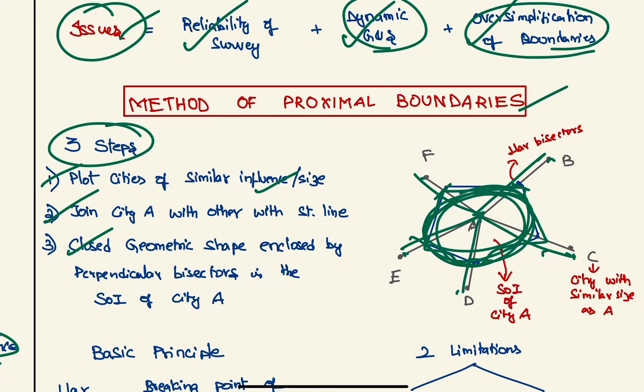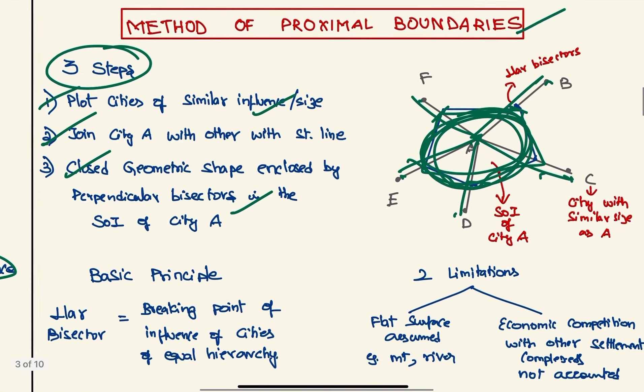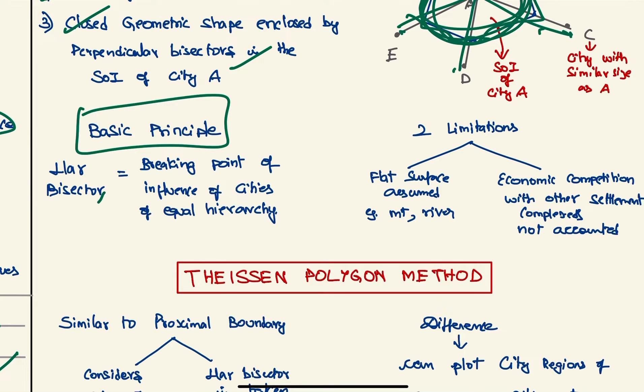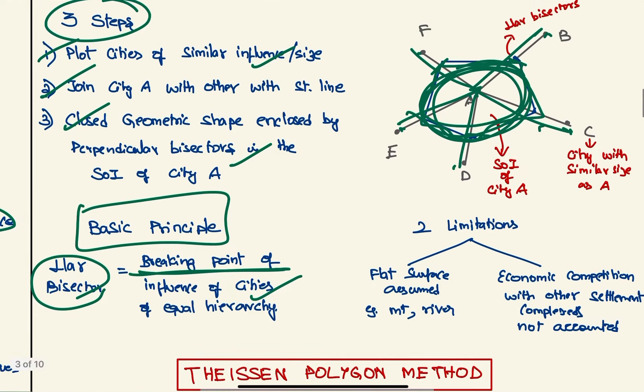So what is the basic principle behind this? The perpendicular bisector is taken as a breaking point of influence of cities of equality. That is, a person living on this side of the perpendicular bisector will go to F for services, and a person on this side will go to A.